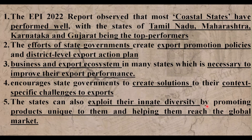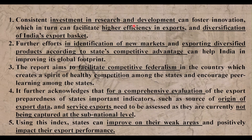States can also exploit their innate diversity — products that are unique to them. For example, Jammu & Kashmir has Basmati rice and apples, while Telangana has pearls. These unique products can be exported and help states raise their presence in the global market. R&D helps improve export efficiency, and diversification means exporting a variety of products rather than focusing on just one.